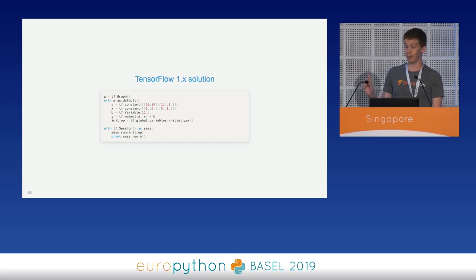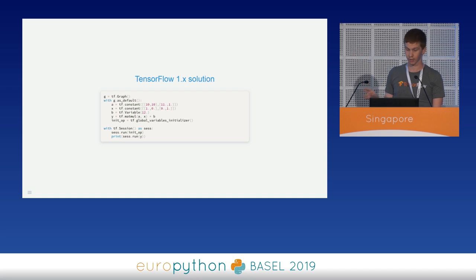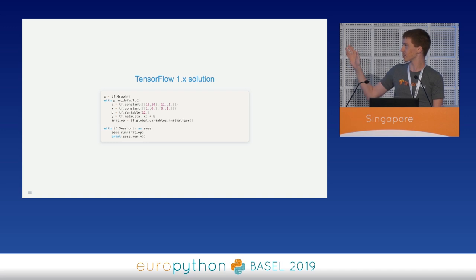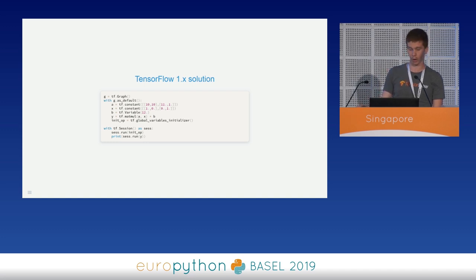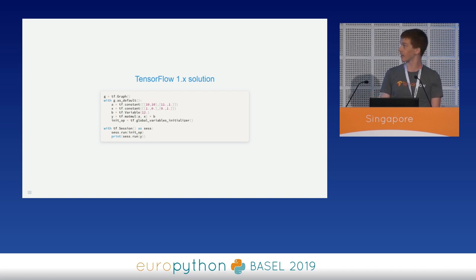In TensorFlow 1, we first describe the computation as a graph inside a graph scope. By default there is a default graph always present, but here we use one explicitly. Then we create a special node with the only goal of initializing the variables — a line everyone familiar with TensorFlow 1 should have seen thousands of times. Then we create the session object, which receives the description of the computation, places the graph on the correct hardware, and we can finally run the computation and get the result.